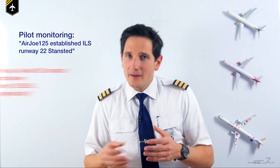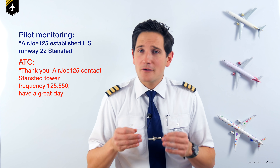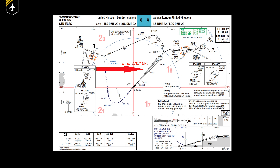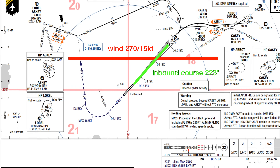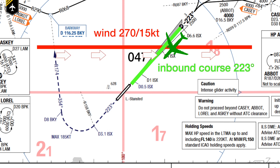They would then reply: "Thank you Airgeo 125, contact Stansted Tower frequency 125.55, have a great day." Now let's put some wind into our approach. Let's say the current wind at Stansted is 270 at 15 knots — so 270 is 47 degrees to the right of the final inbound course, meaning the wind will push you off the localizer if you don't correct for it.